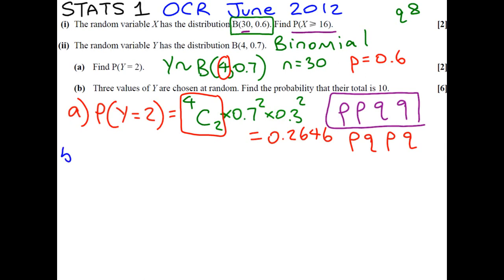Part B is a bit more tricky. It says that three values of y are chosen at random. Find the probability that their total is 10. So the first value of y, the second value of y, the third value of y. And remember, y can take the values 0, 1, 2, 3, 4. Now you have to use your head and think, what combinations of those can we use to add up to 10 with just 3?